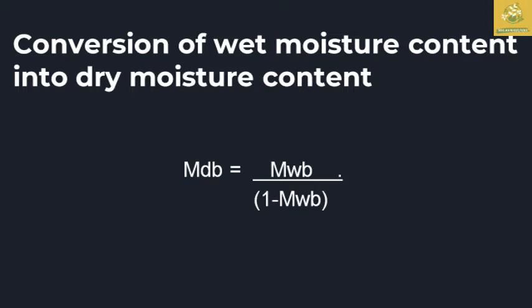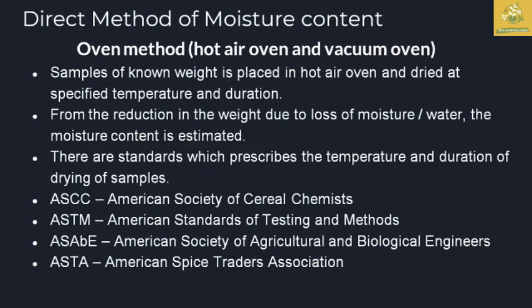Now we move to the direct methods of measuring moisture content. The first is the oven method, also known as hot air oven or vacuum oven. In this method, the moisture present in a product is measured by placing the product in a hot air oven at a particular temperature for a specific time, reducing the weight due to loss of moisture. The moisture content is then estimated from the weight difference.